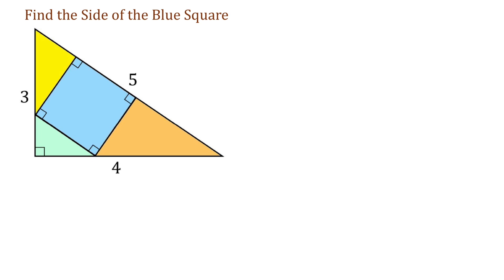To solve this problem, first we need to establish that in these triangles — the yellow, the green, and the orange — the ratio of the sides is also 3 to 4 to 5. We know that in a square, all 4 sides are equal and each angle measures 90 degrees. Then, if this angle is 90 degrees, this one is also 90 degrees, and so is this one.